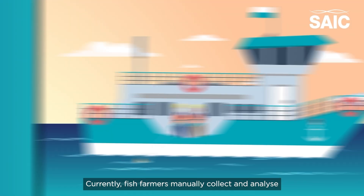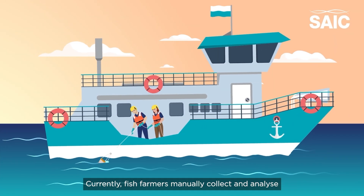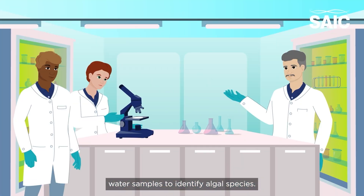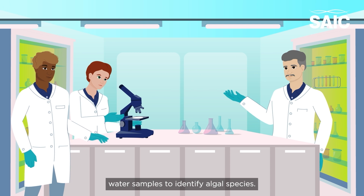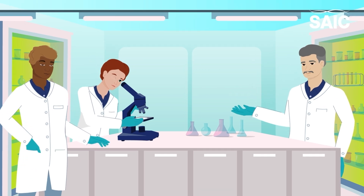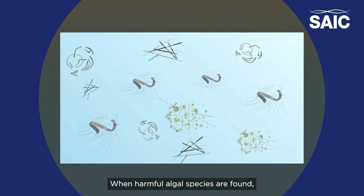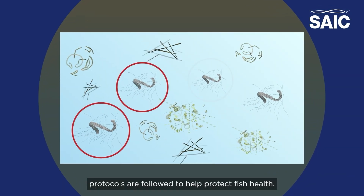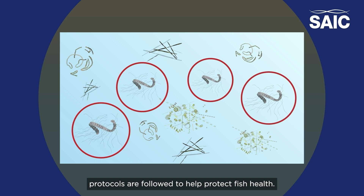Currently, fish farmers manually collect and analyze water samples to identify algal species. When harmful algal species are found, protocols are followed to help protect fish health.